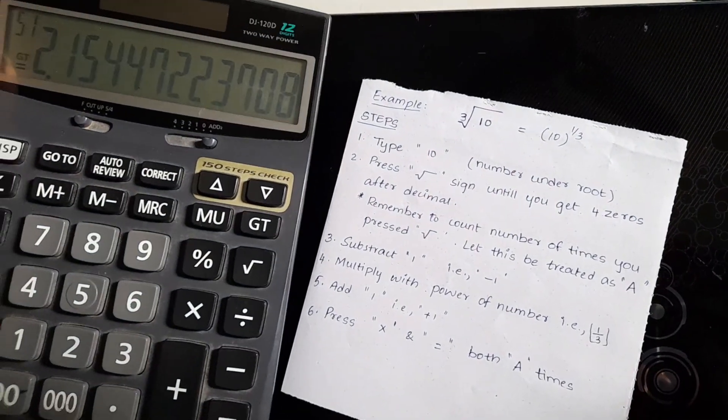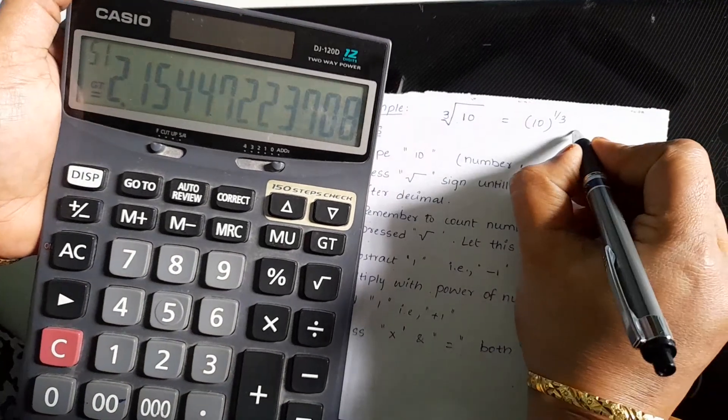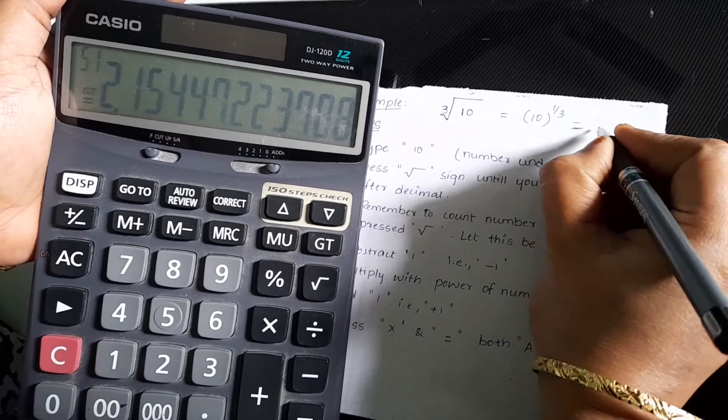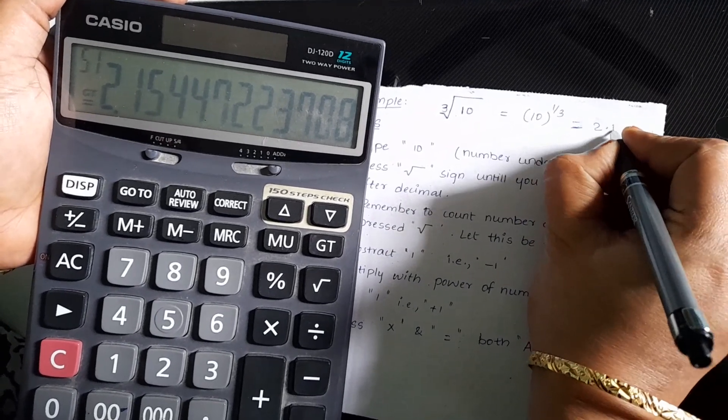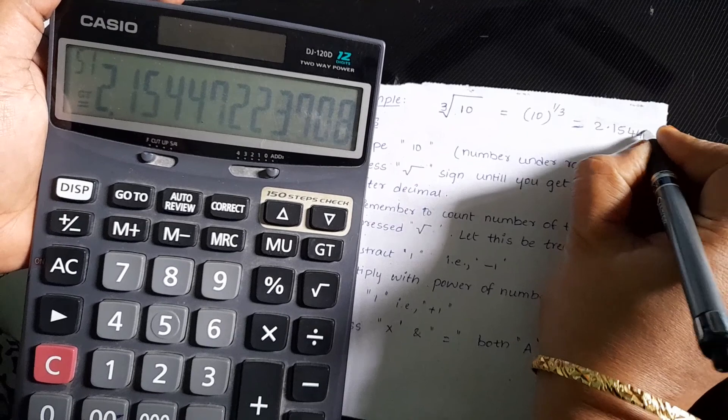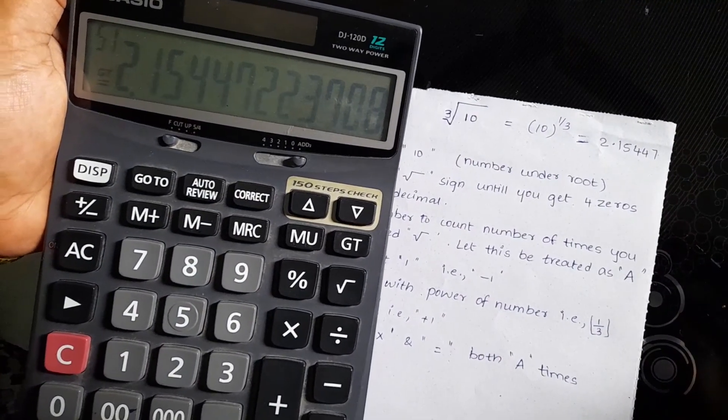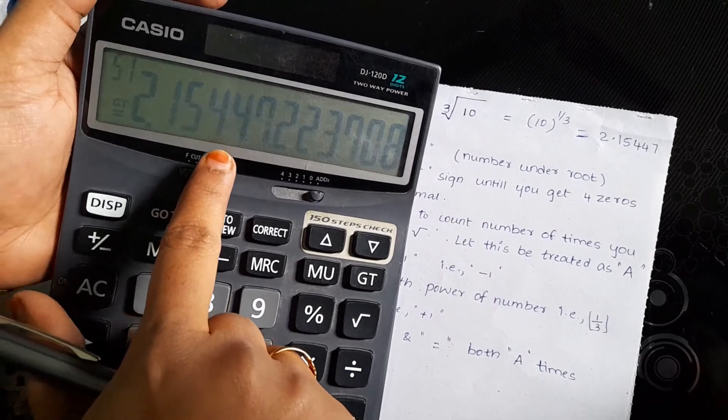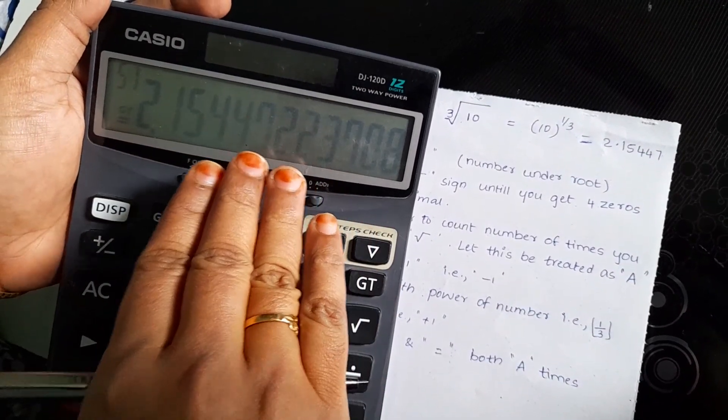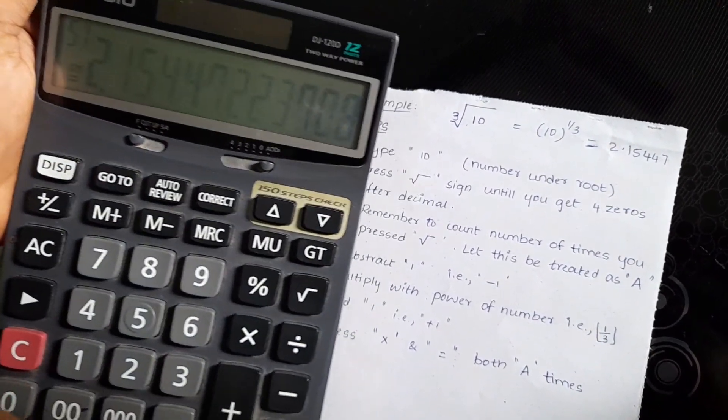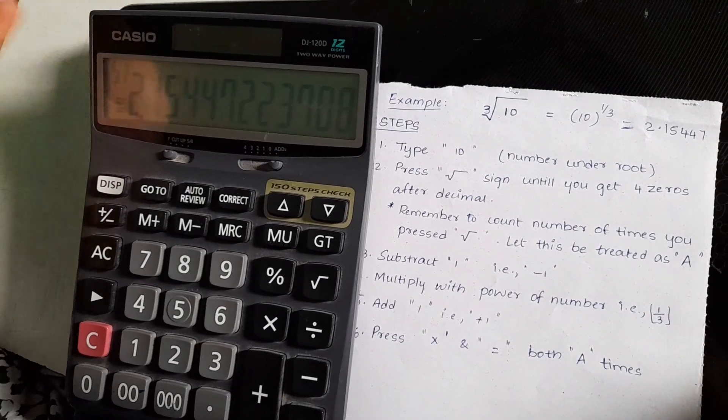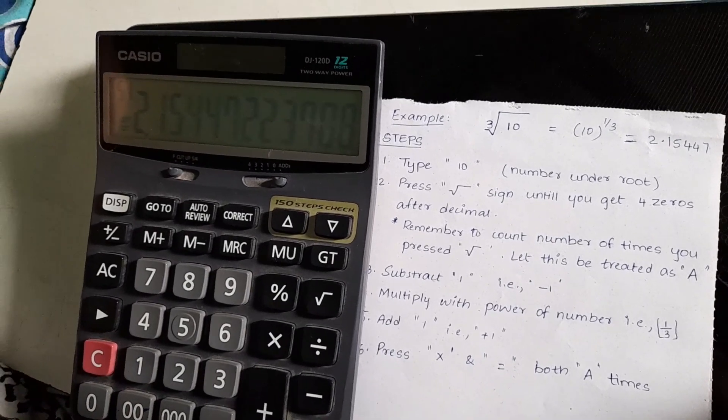So, we got the answer. The cubed root of 10 is equal to 2.15447. This is an approximate value. So, this is very useful during your competitive exams and where the scientific calculators are not allowed into the examination hall. Hope this video is helpful to you.